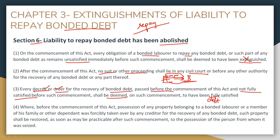Section 6 subsection 4 also covers property. If before the commencement of this Act, a creditor had forcibly taken any property of the bonded laborer, their family member, or a dependent — in order to recover the debt — that property must be restored after the Act comes into force.